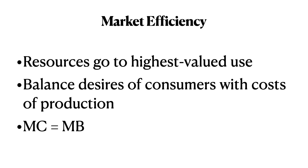Our resources here are going to the highest valued use to the consumers who most value it. The process balances the desires and needs of consumers with the cost of production. And at that intersection, the marginal cost of production is just equal to the marginal benefit of consumption. And so we've fully balanced our consumer side and our producer side.